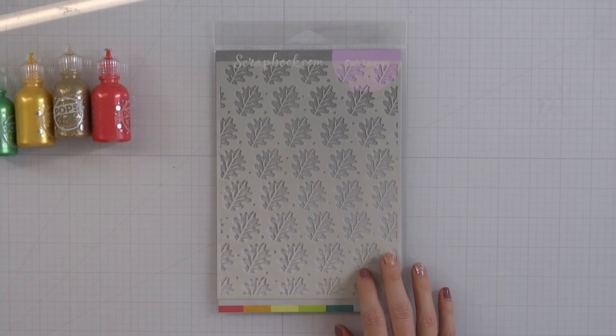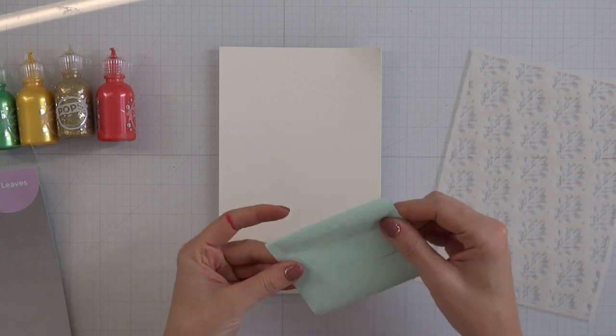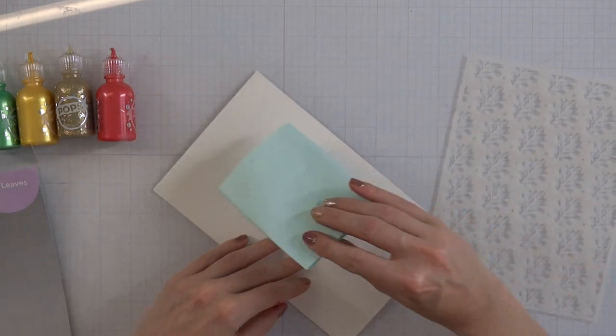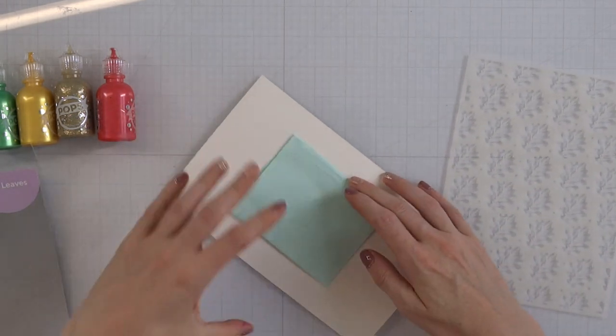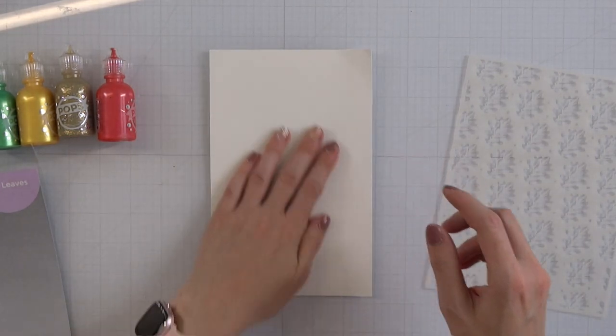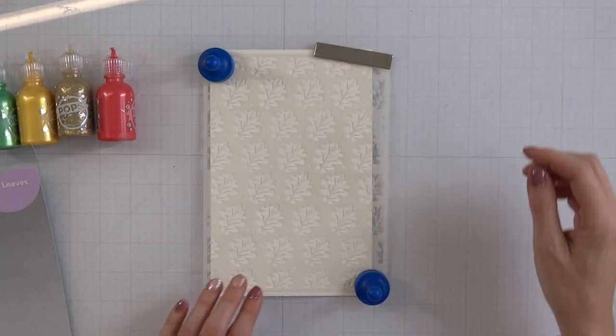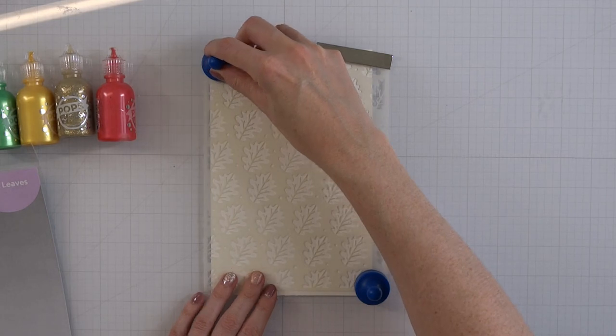The first thing I'm going to pull out is this new oak leaves stencil for my background. I'm going to use watercolor cardstock because I'm mixing some pops of color with Altenew embossing paste to get multiple colors and a good consistency for stenciling.